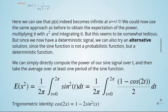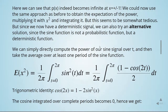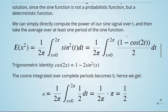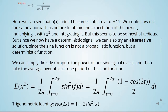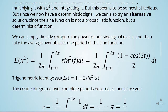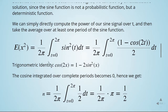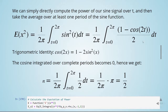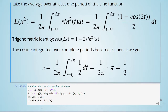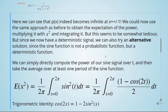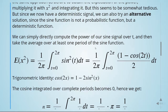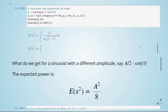Since the sine wave is a deterministic function, we can also directly compute the power over at least one period and take the average. Computing this integral, it's important to remember the trigonometric identity that simplifies the result. The cosine integrated over a complete period becomes zero, and we again obtain 1 divided by 2 — confirming the result using both methods: the PDF approach and the deterministic approach.